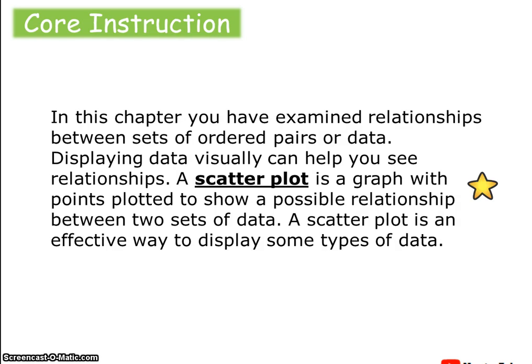In this chapter, you've examined relationships between sets of ordered pairs or data. Displaying data visually can help you see relationships. A scatter plot is a graph with points plotted to show a possible relationship between two sets of data. It is an effective way to display some types of data.